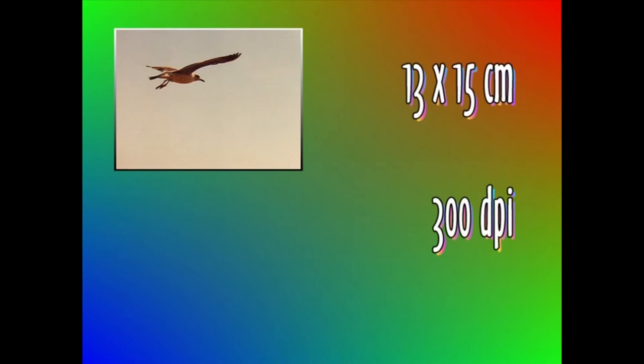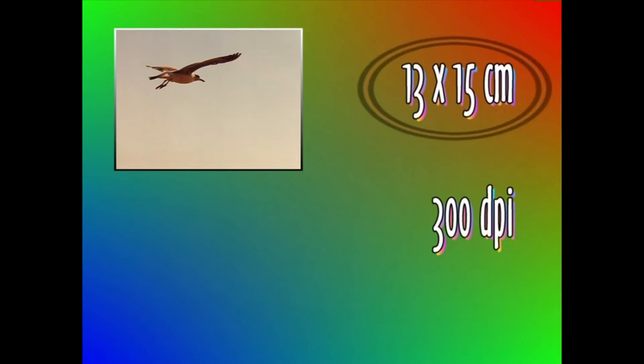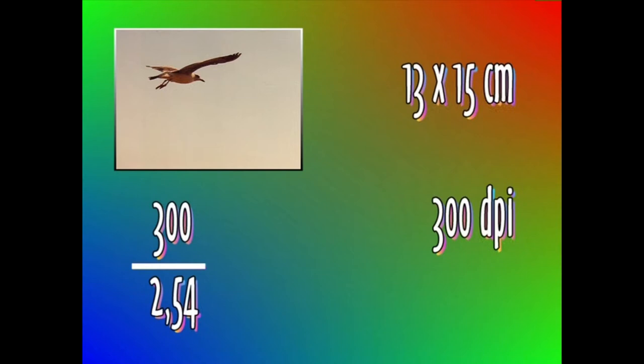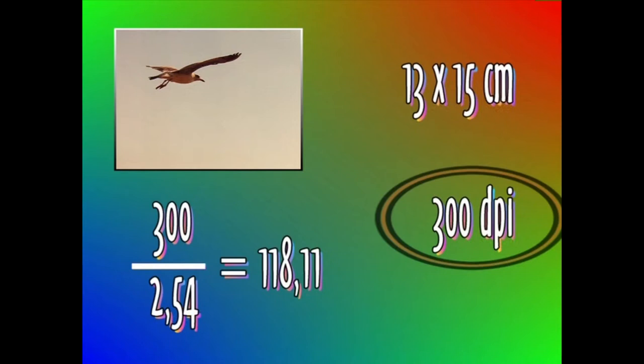Kalkulua egiteko, lehendabizi datu guztiak neurri unitate berean jarriko ditugu. Argazkia zentimetrotan daukagu dagoeneko, baina bereizmena azbetekotan. Beraz, zentimetrotara aldatzeko, irureun puntuak bi koma berrogeita amalau zatitan banatuko ditugu. Bi koma berrogeita amalau baita azbetekoaren neurria zentimetrotan. Emaitza: hemezortzi koma hamaika zentimetro. Beraz, bai bereizmen horizontalarentzat, bai bereizmen bertikalarentzat, fabrikatzaileak hala agintzen baitu.